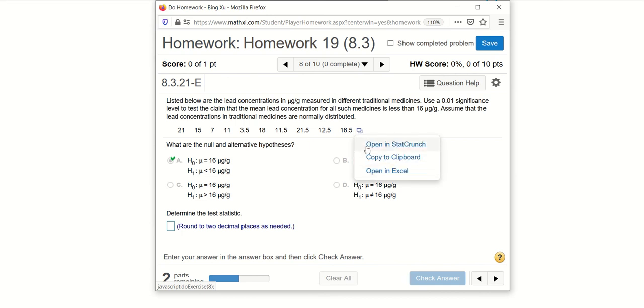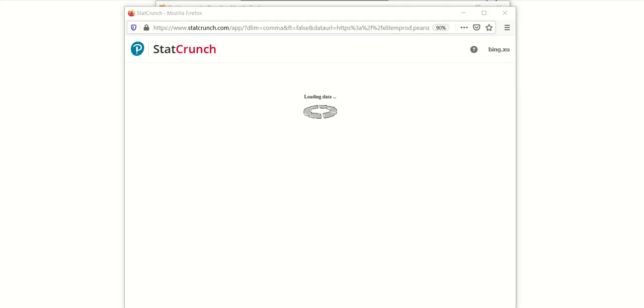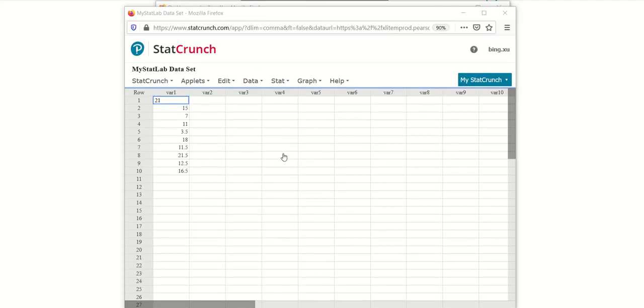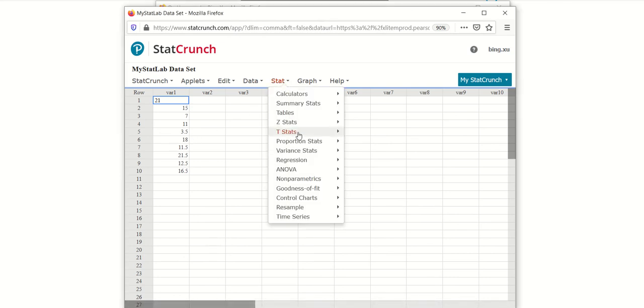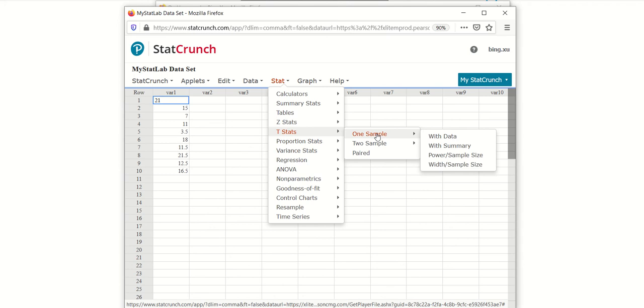We'll open the data in StatCrunch. Now we see the data in variable one, this column. And Stat, we'll go to T Stat, one sample, and here is with data.